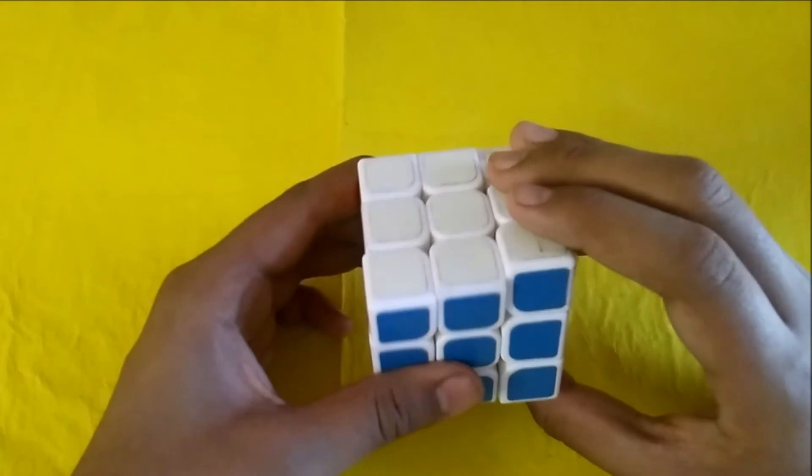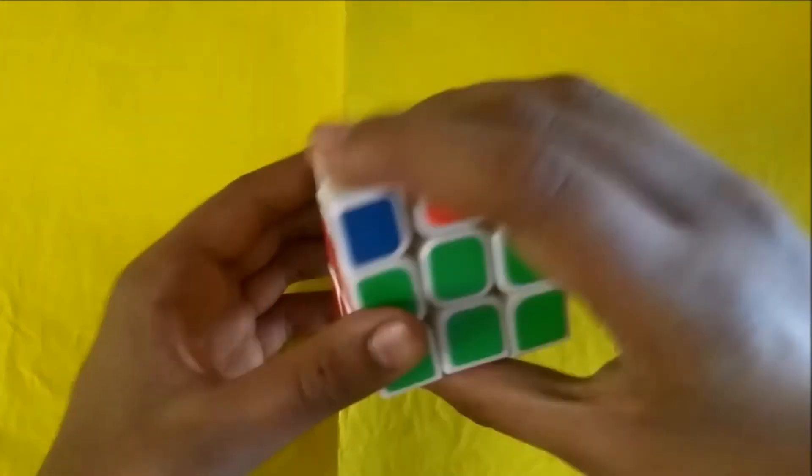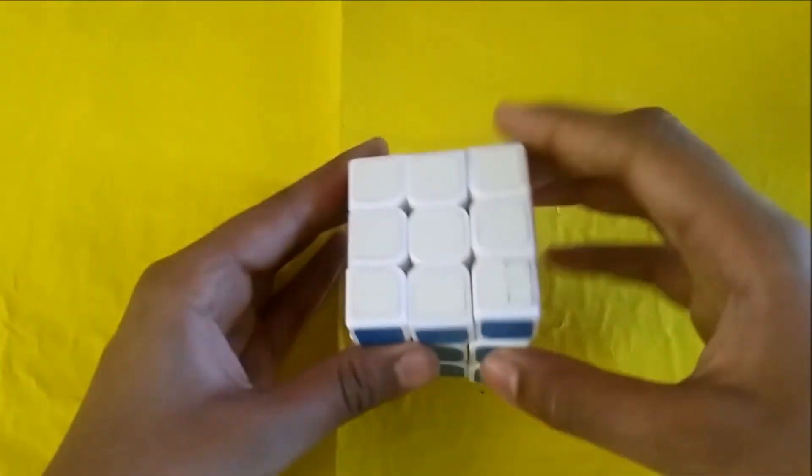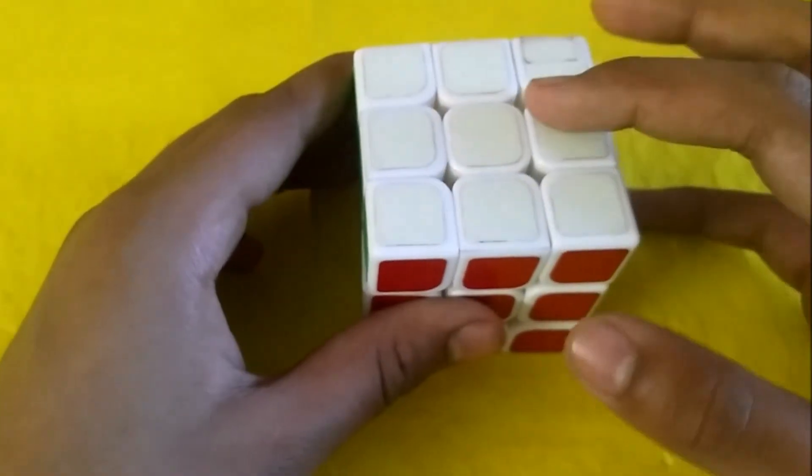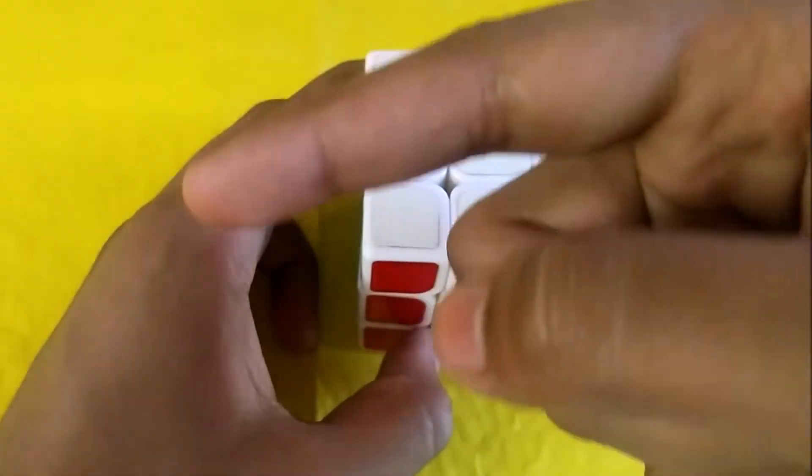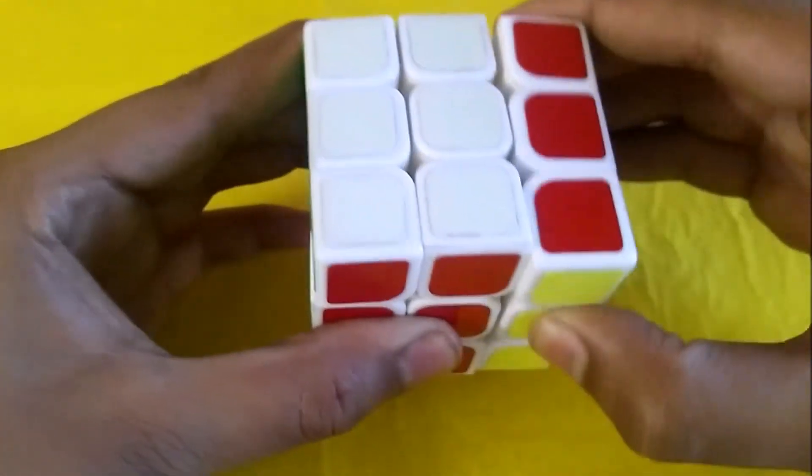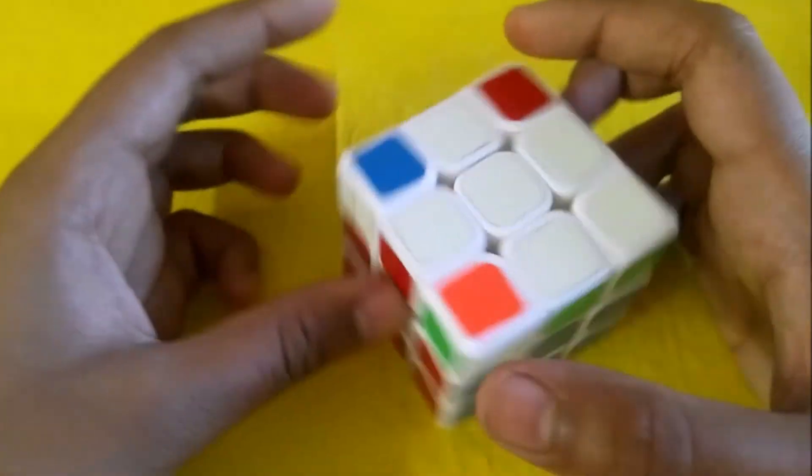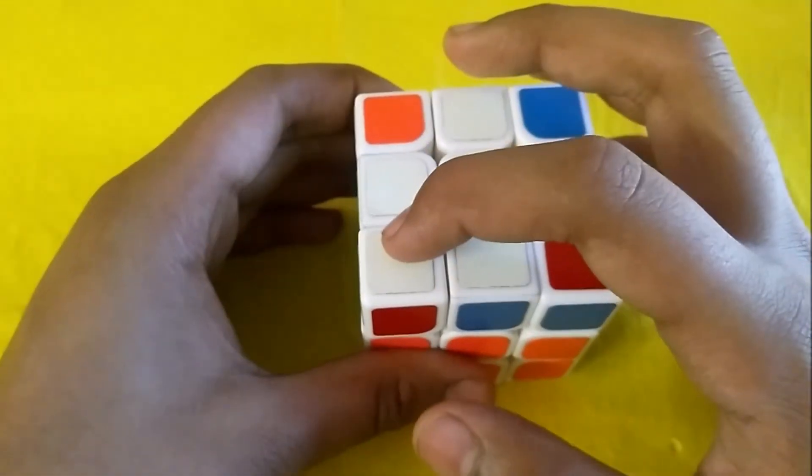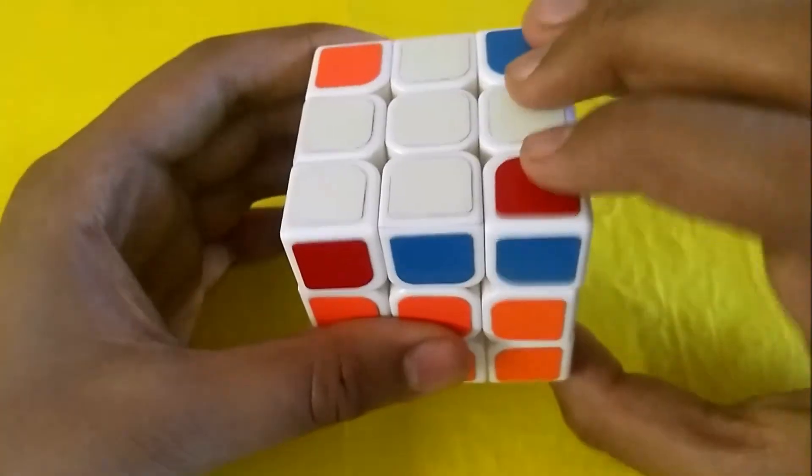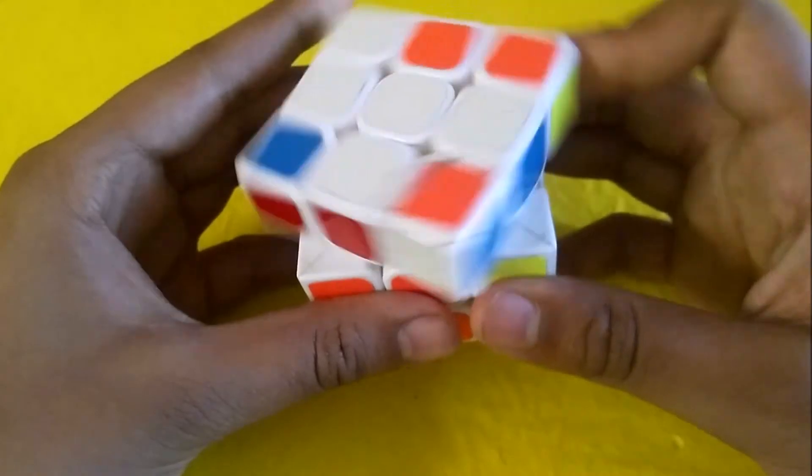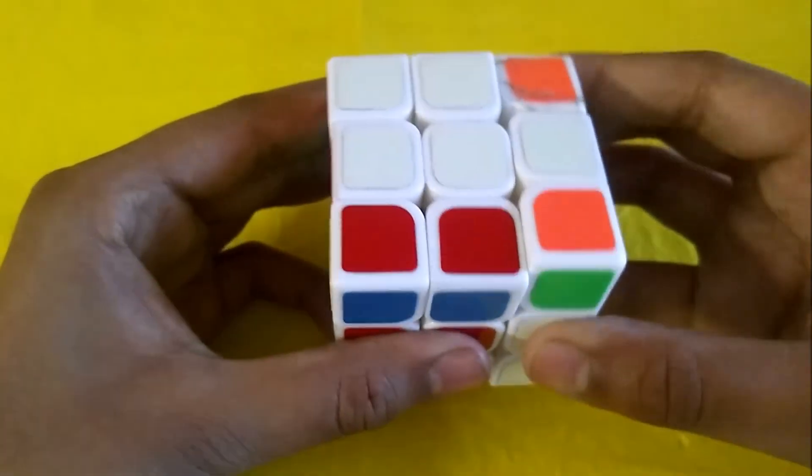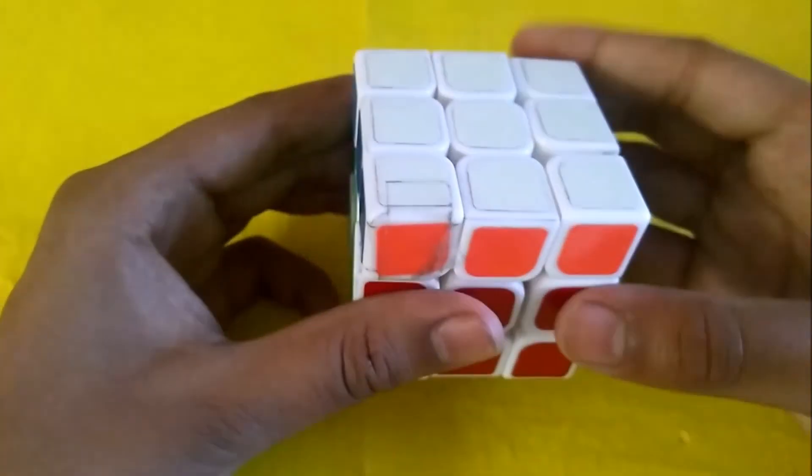But many other YouTubers just say R U R prime U R U2 R prime. And move the left corner in the left bottom and do R U R prime U R U2 R prime. Then we come over here, R U R prime U R U2 R prime, and the cube is solved. This method only I solve, and maybe more YouTubers do this.